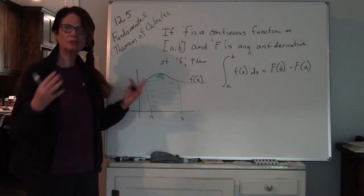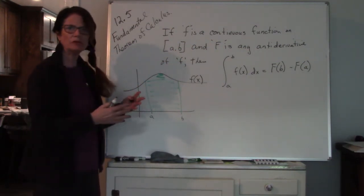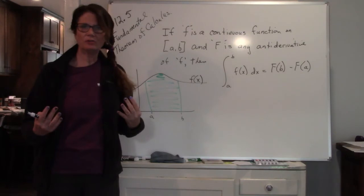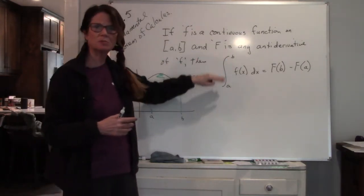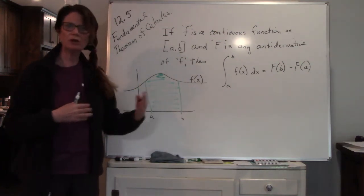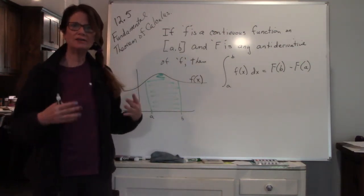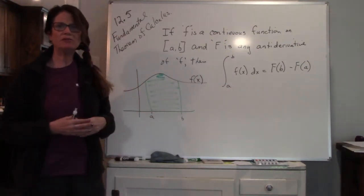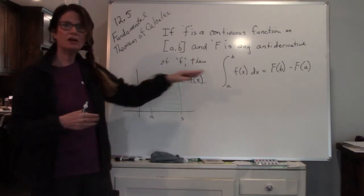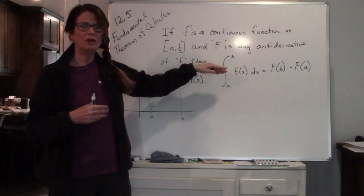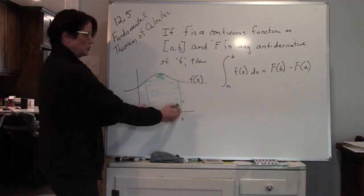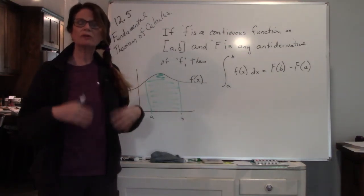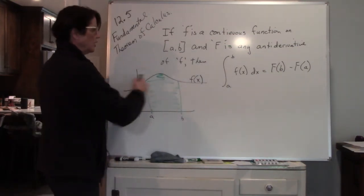It sounds a little more complicated than it is, but remember all we're doing is finding antiderivatives, and now we're finding the difference between the two x values. In 12.1 we were doing indefinite integrals, so we didn't have any values — we were just looking at a family of values, so that's where you put plus C. Now we're talking about a definite integral where we have a definition between two values, so the plus C is no longer in play. We're finding an actual value — actually finding the area under the curve.